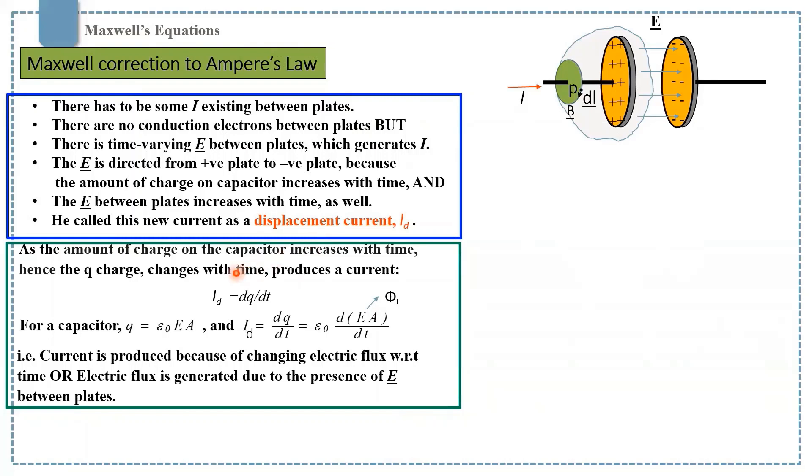As the charge on the capacitor changes with time, current will be produced, and we can write in the form of this formula: ID equals derivative of Q. For a capacitor, we have total charge Q equals epsilon naught E A, where E is the electric field and A is the area of the plate. We simply replace Q with these terms. E A is the electric flux, so this means current is produced because of changing electric flux with respect to time. Or you can say electric flux is generated due to the presence of electric field between the plates.